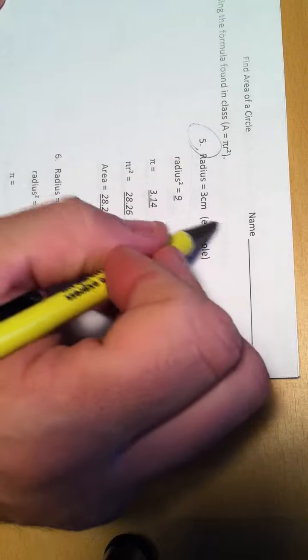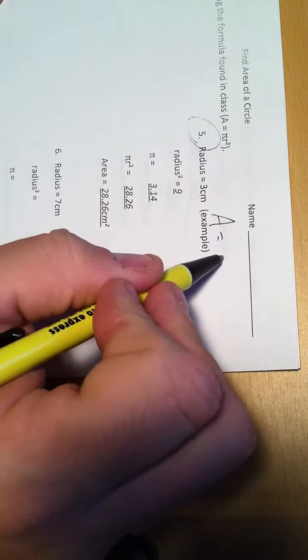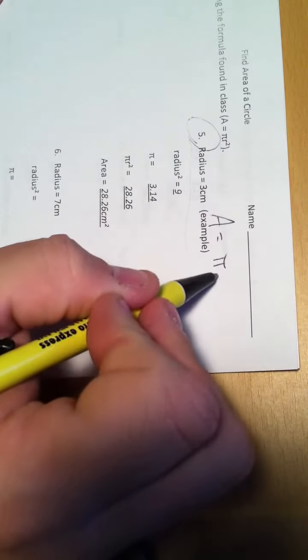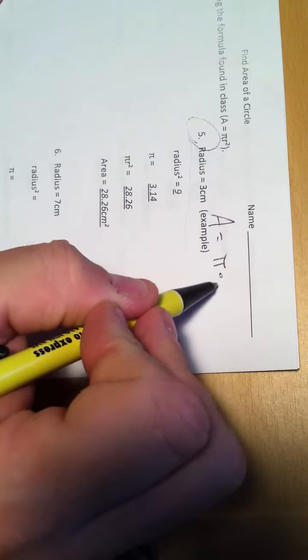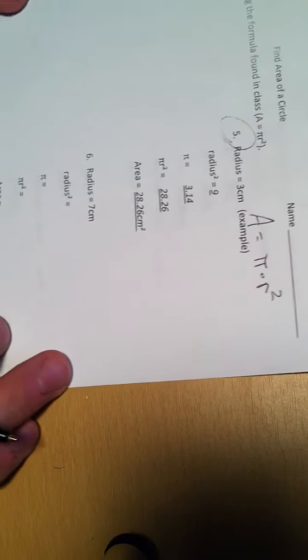So, the first thing you're given is the radius. Now, what we're going to need for the problem, because what we are doing is the area of a circle equals pi times the radius squared, and that's what we are doing.